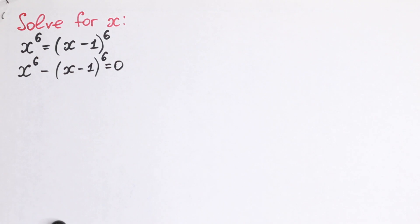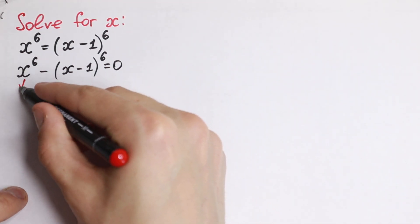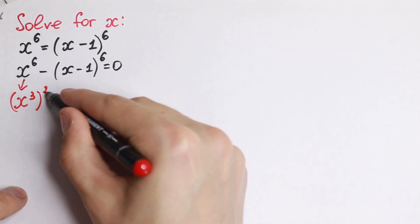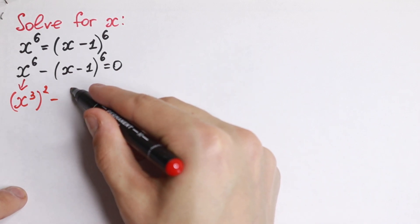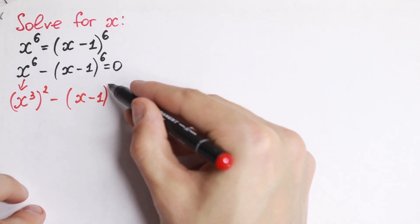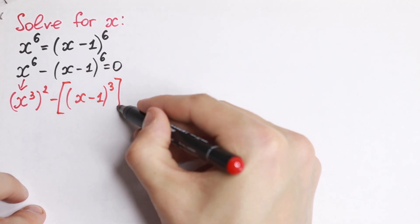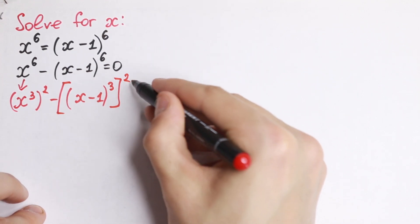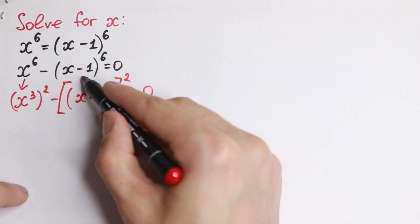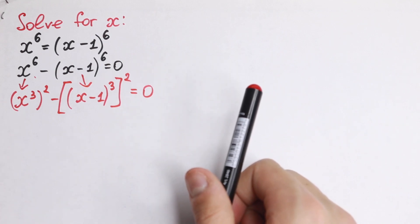What I'm going to do next — take a look. We have a 6th power, so it's really good to express this as x cubed, squared, minus x minus 1 to the third power, squared, all equal to zero. I just write this expression in that form — and this is the same thing.